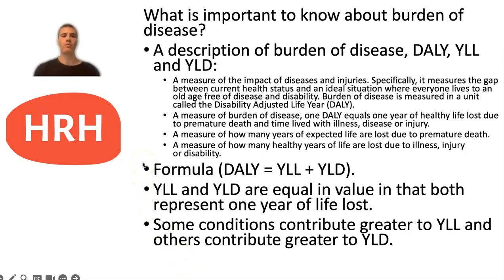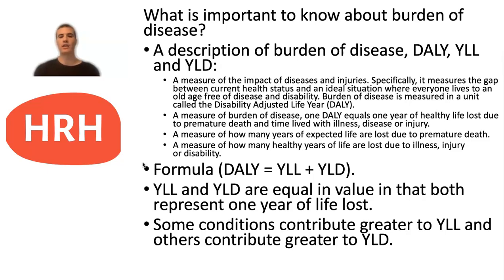The formula helps make sense of that description: DALY is equal to YLL plus YLD. YLL relates to how many years of expected life are lost due to premature death associated with a particular condition. For example, if I was expected to live to 82 years and I died prematurely from cancer at 70, I've lost 12 years — that would be 12 YLLs contributing to the DALY calculation. YLD relates to how many years of healthy life might be lost due to illness, injury or disability. If a back injury affects my healthy years of life, it might contribute 10 YLDs to the DALY for back injuries.